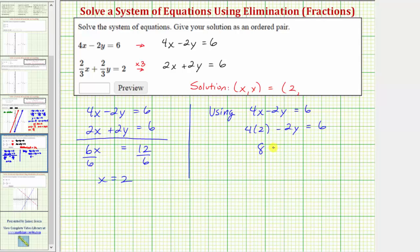Four times two is eight. Eight minus 2y equals six. Subtracting eight on both sides would give us negative 2y equals negative two. Dividing both sides by negative two, simplifying, we have y equals positive one.